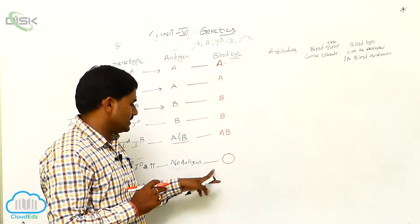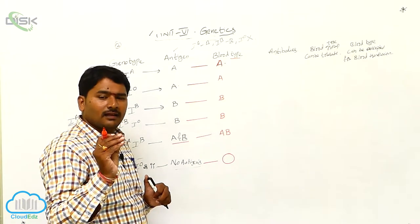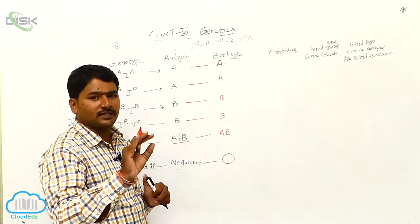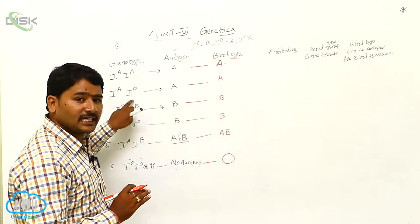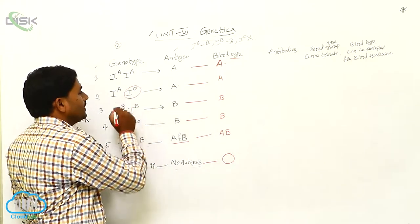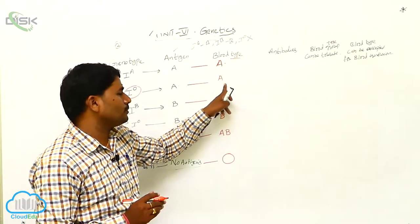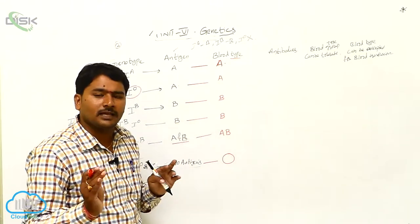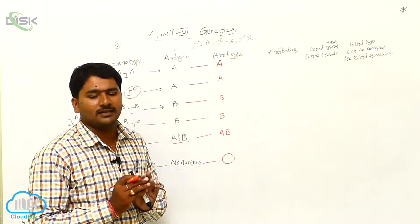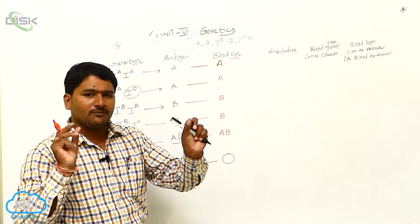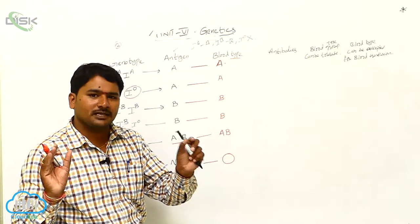When no antigens are present, that is O blood group. So what allele produces the same type of antigen? If Ia Ia are the alleles, they produce A antigen. If Ia I0, I0 does not produce any antigens, but Ia will produce A antigen. So when A antigen is produced, the blood group is A. Simply, the blood group will be the same as the antigen: if A antigen is present, blood group is A; if B antigen is present, blood group is B; if both are present, AB; if none are present, O.